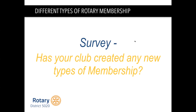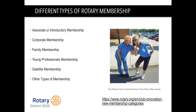It's nice to see that we've got a mix of different types of memberships here. We have associate or introductory memberships, corporate memberships, family memberships, young professionals memberships, satellite memberships, and then everything else falls into other kinds of memberships. You can see up there the Rotary Club of Central Oceans Toms River, New Jersey — quite a long name. You can click on that link and it'll take you to a Rotary International article on their club innovations and the three different types of memberships they have.